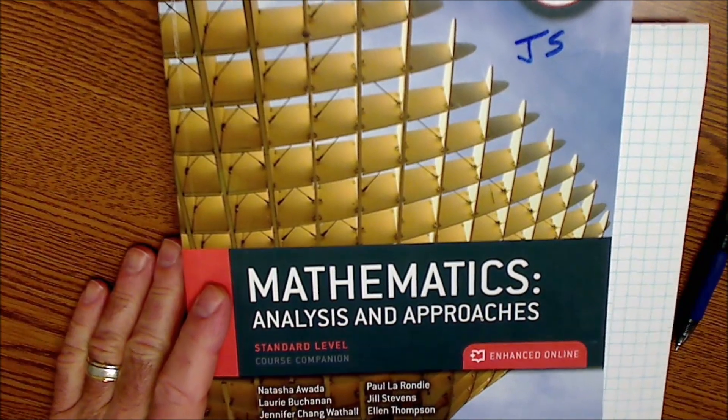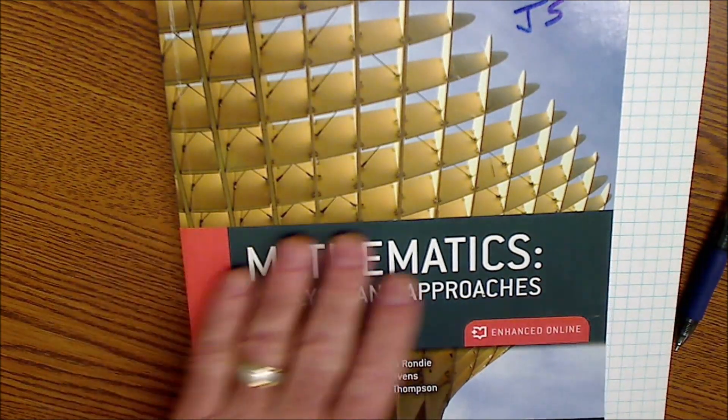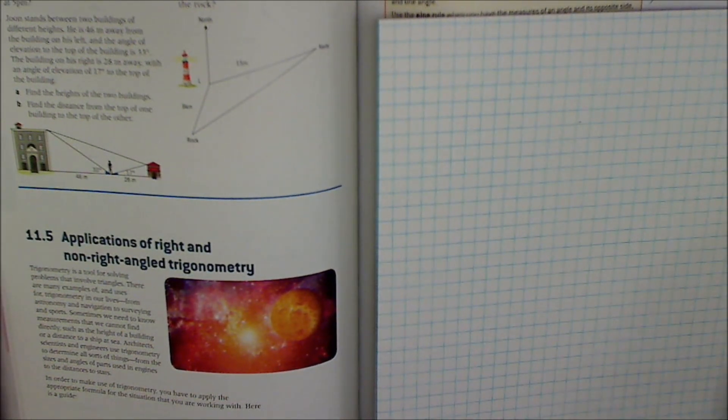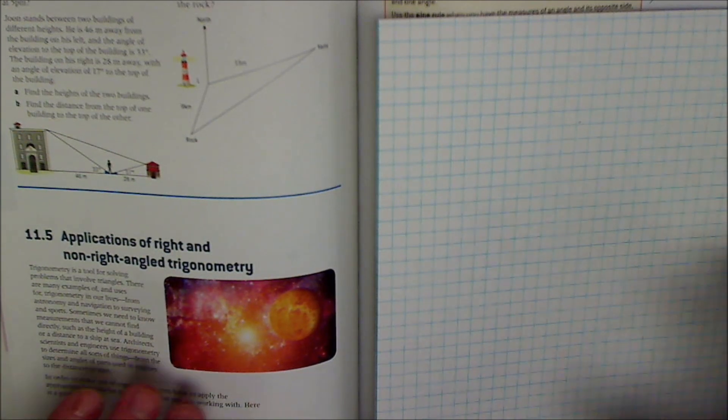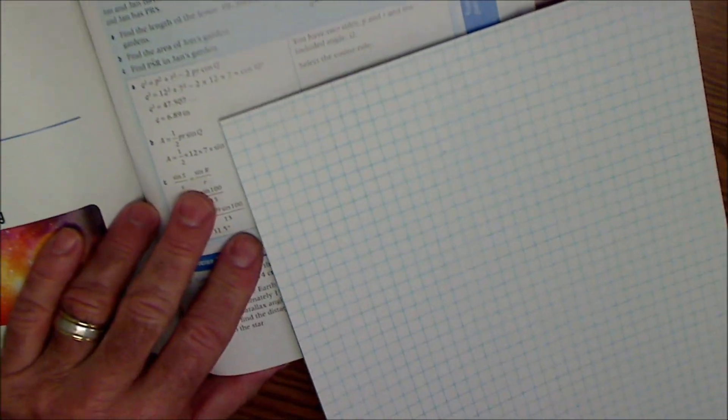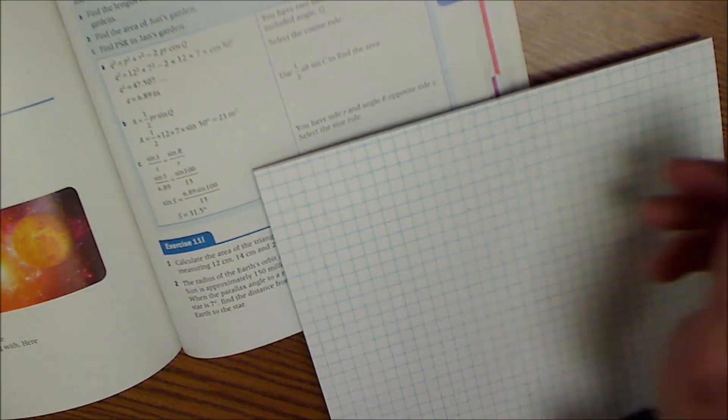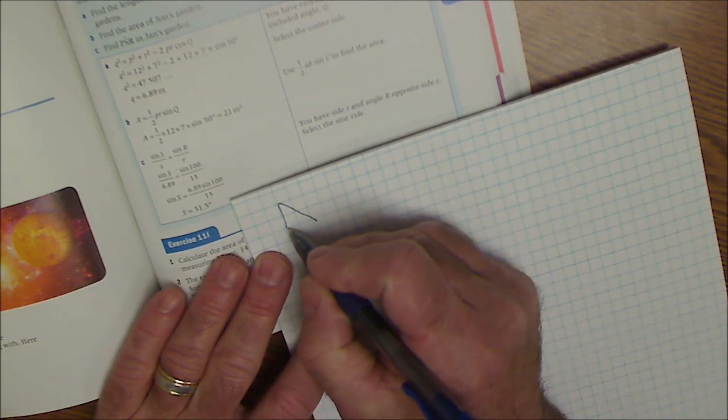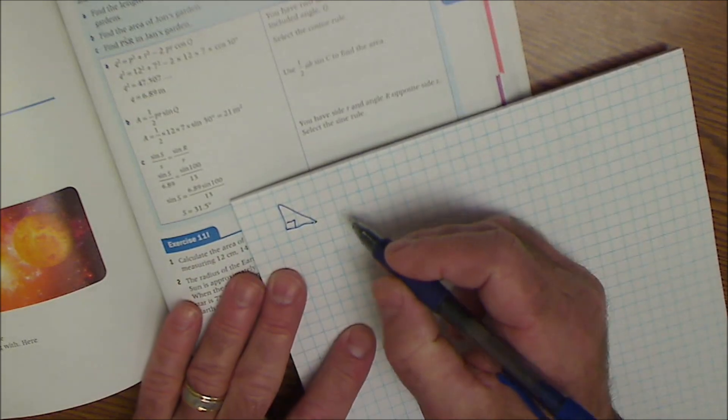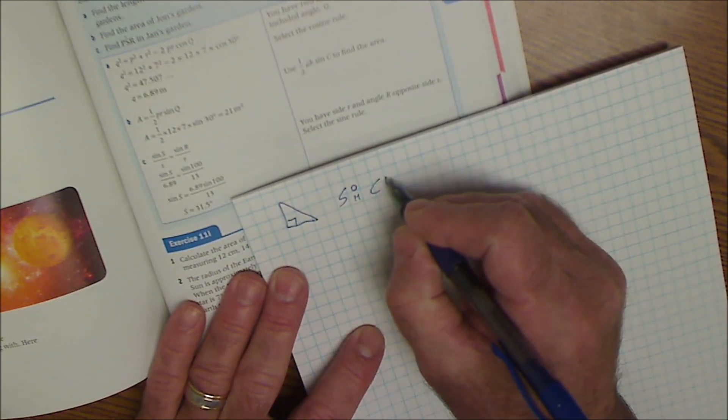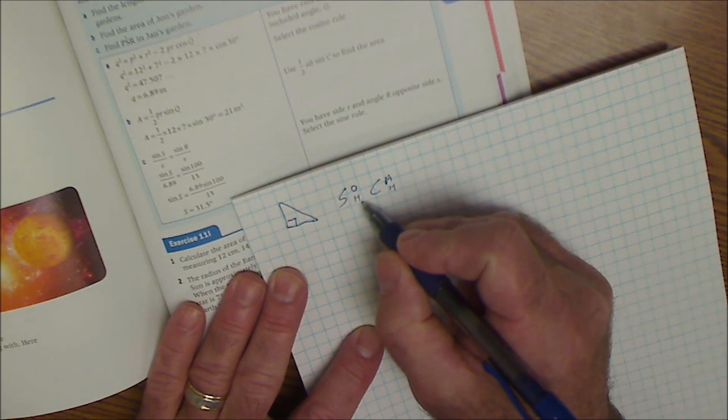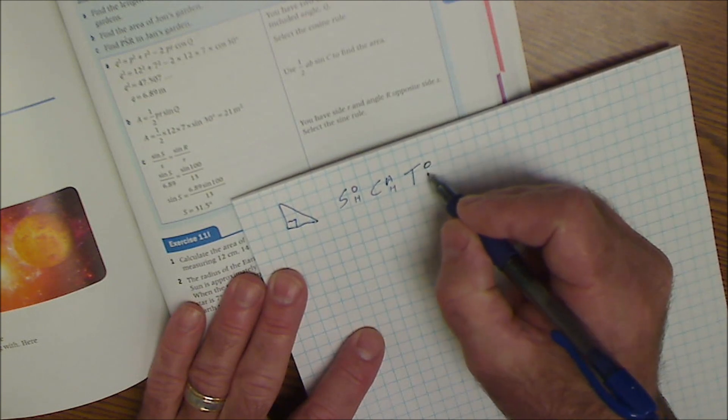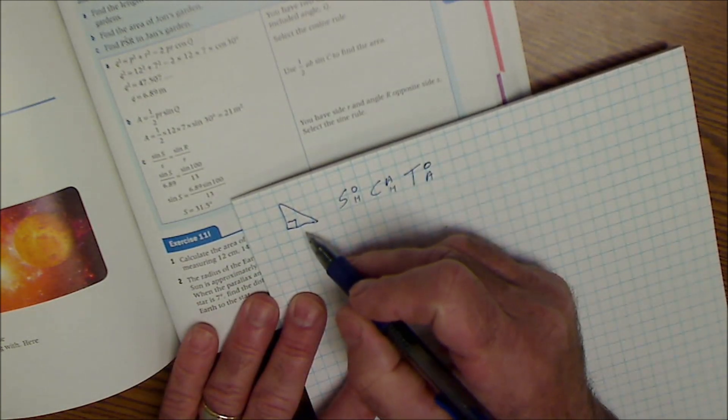This is Math Analysis and Approaches, IB Math book, standard level. We are in Chapter 11, Section 11.5, Applications of Right and Non-Right Triangles. Some trigonometry here. I'm just going to do a quick review of non-right triangles and then a few problems from this section. If we have a right triangle, that's what we've been doing all along. Right triangle trig is SOH CAH TOA. Sine of any angle is the ratio of the opposite over hypotenuse. Cosine of any angle, adjacent over hypotenuse. Tangent of any angle is the opposite over adjacent. That only works in right triangles.